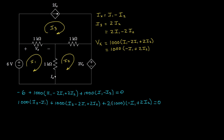Now I have two equations and two unknowns. Grouping terms by I1 and I2 in the first equation: for I1, we have 1,000·I1 minus 2,000·I1 plus 1,000·I1, which gives zero times I1. For I2, we have 2,000·I2 minus 1,000·I2, giving positive 1,000·I2. The constant term is negative 6, which moves to the other side as positive 6.